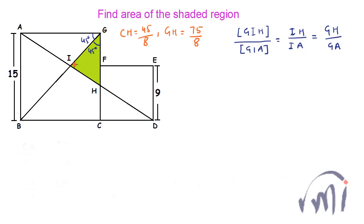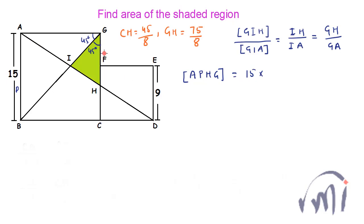We have found the ratio of areas of triangles GIH and GIA. To find the actual area, draw a line from point H to a point P such that HP is parallel to AG, forming rectangle APHG. The area of triangle AHG is half the area of that rectangle, so area of rectangle APHG equals 15 multiplied by GH, which is 75/8, and the area of triangle AHG equals 15 multiplied by 75 divided by 16.